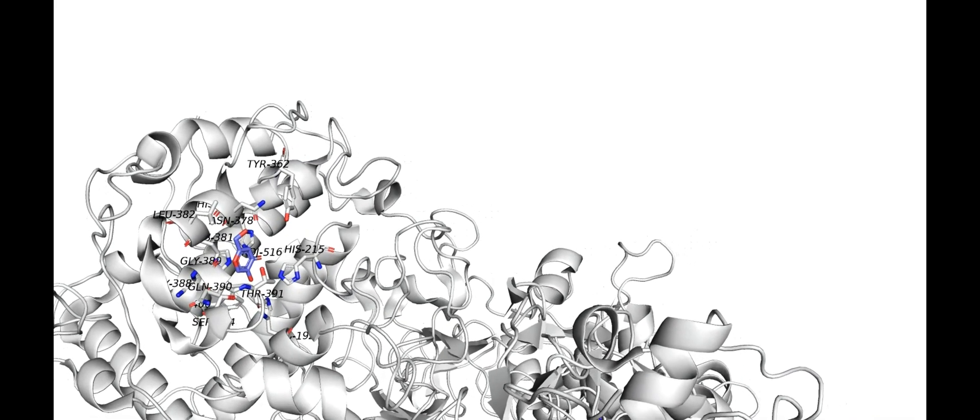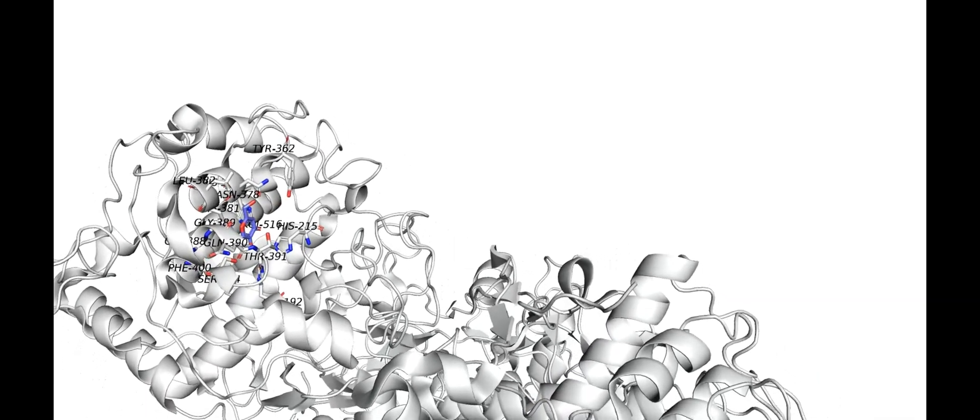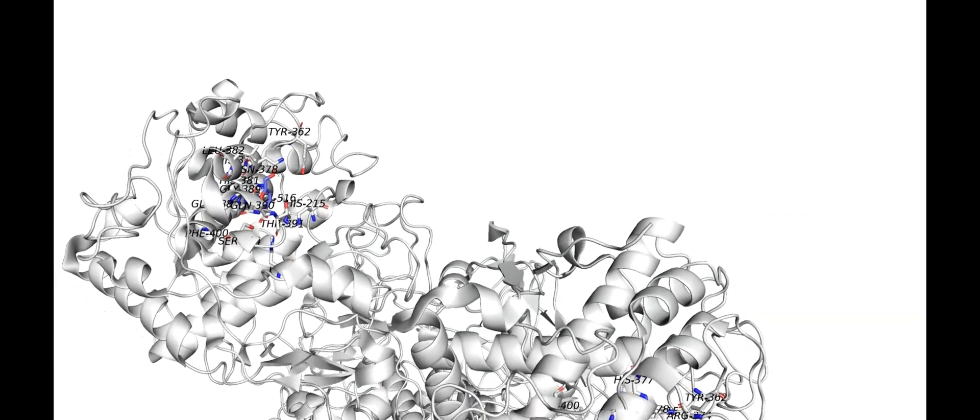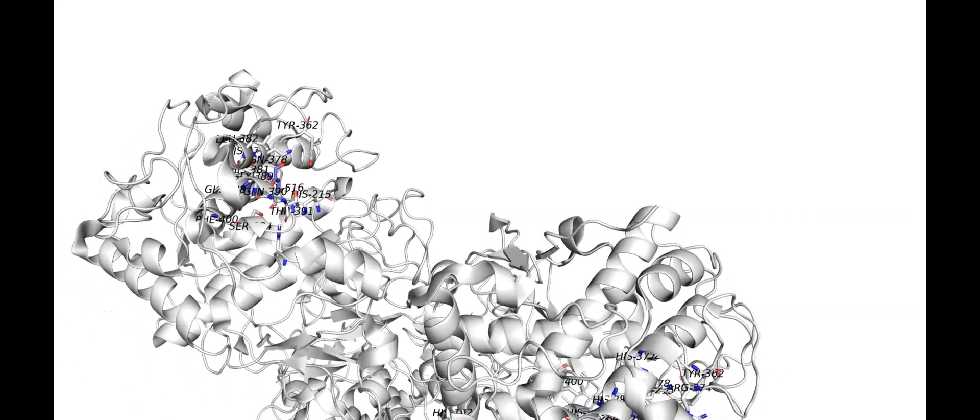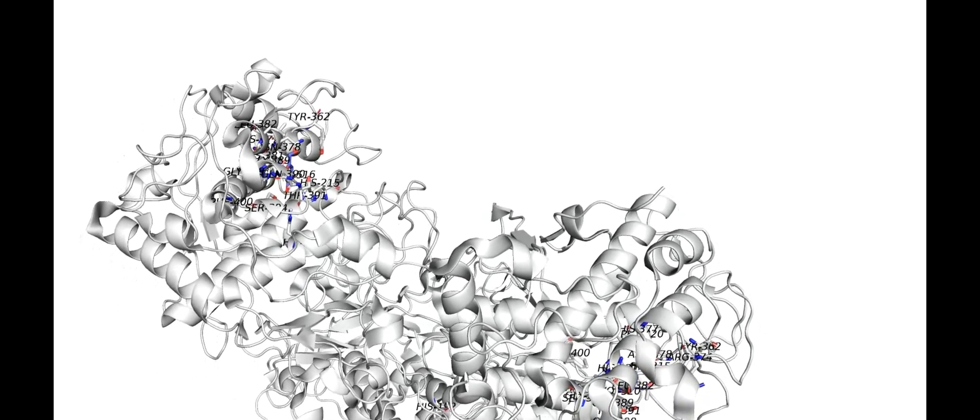Typically, tyrosine will bind with this active site, and from there it will undergo various chemical reactions until melanin is produced. However, when kojic acid binds to this active site, tyrosine is unable to bind to it, thus preventing melanin from being produced.